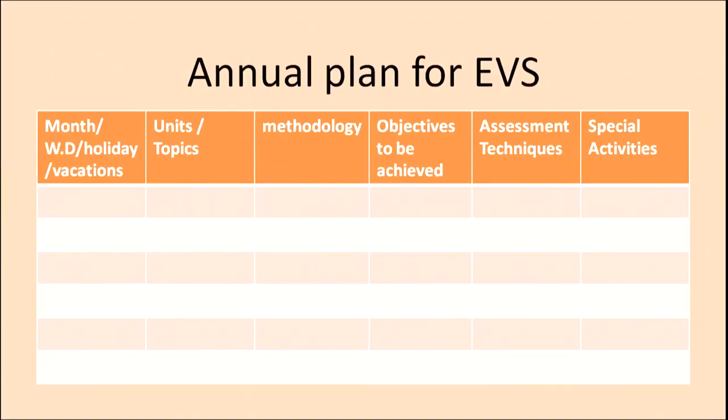The next is a format I made myself. Though we still have six columns, a few things have been changed. Month is there, then an elaboration: how many working days, holidays, and vacations in that month. After that, which unit or topic you are going to teach. The next column is methodology — because it is very important.